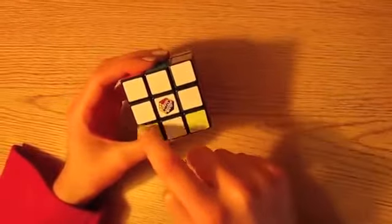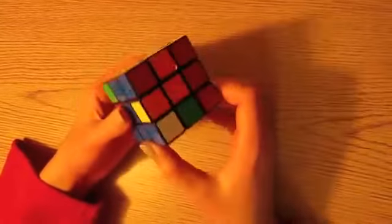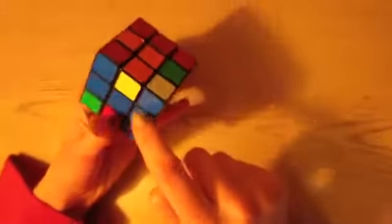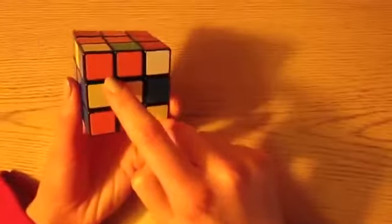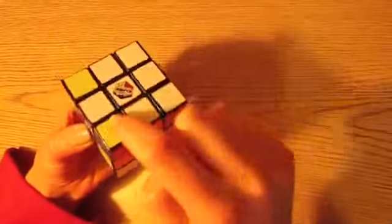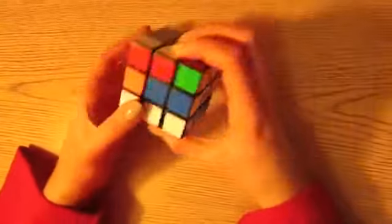The next step in solving the top face is getting the k sub x, y, z's in their corresponding corners. To do so, we put them on the bottom under their adjacent side colors, and using a simple four-step algorithm, we moved it into the top face oriented in the correct position.